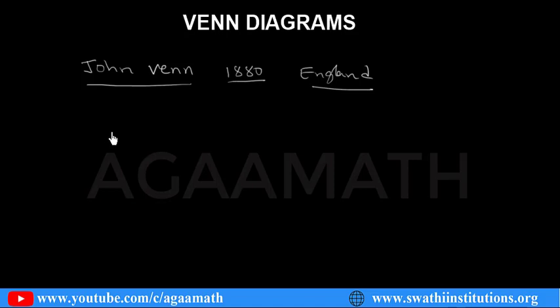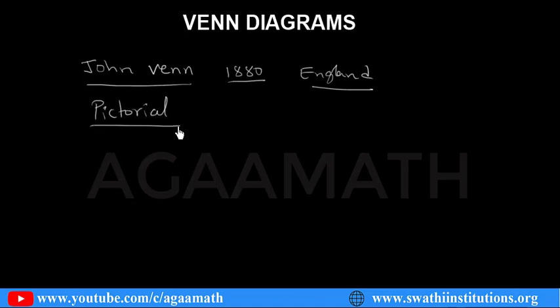Now we are going to represent sets in a pictorial form. We call it pictorial. That pictorial presentation of the sets is what? Venn Diagrams.